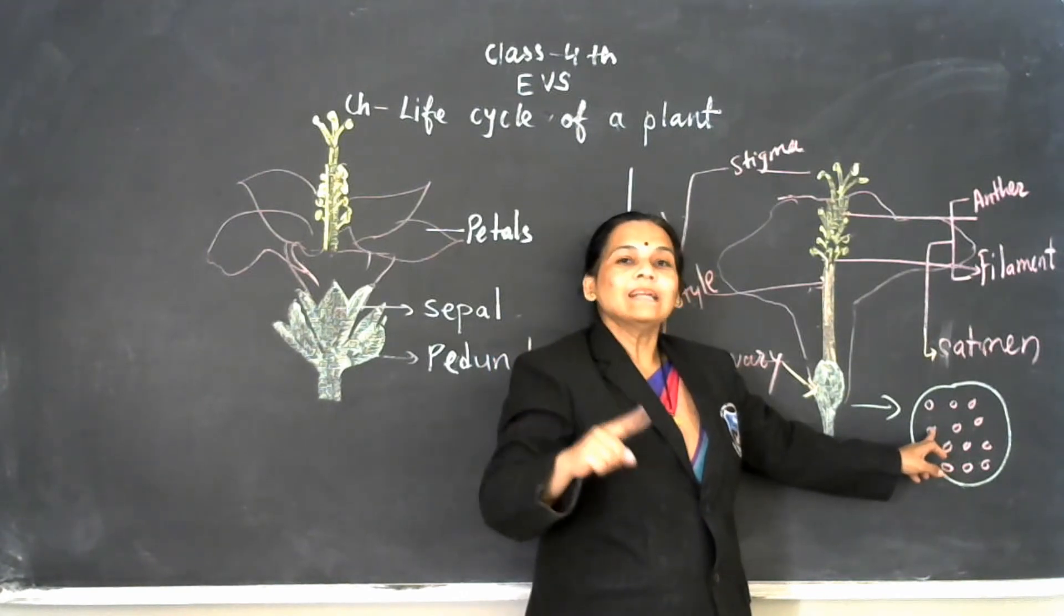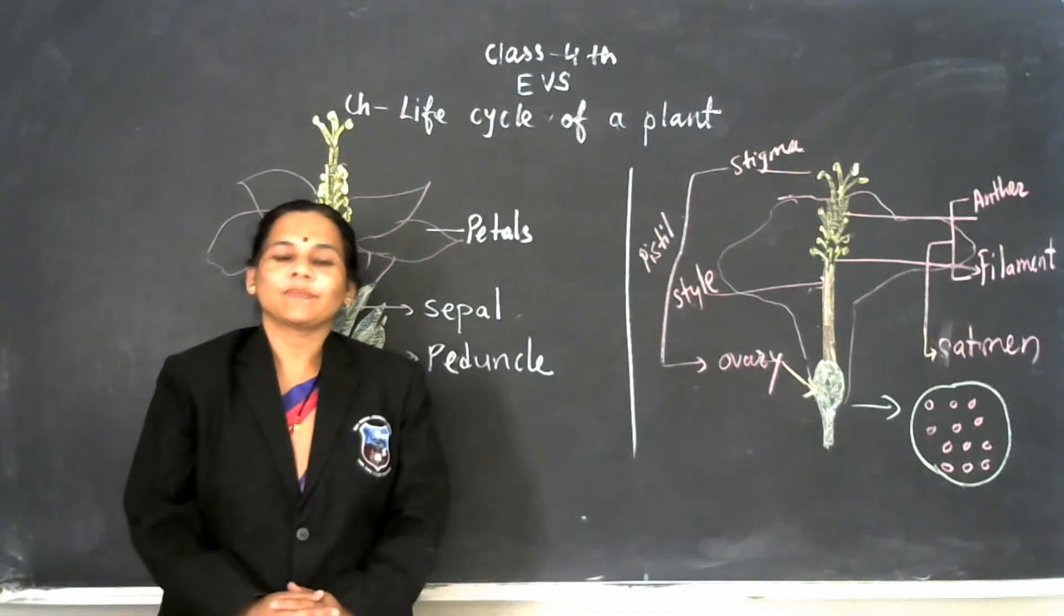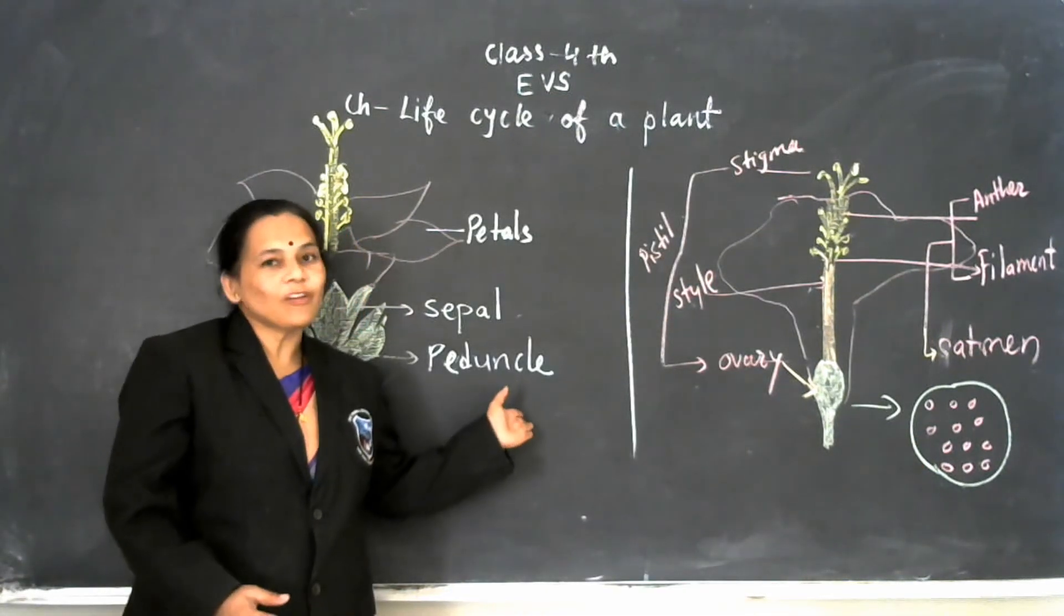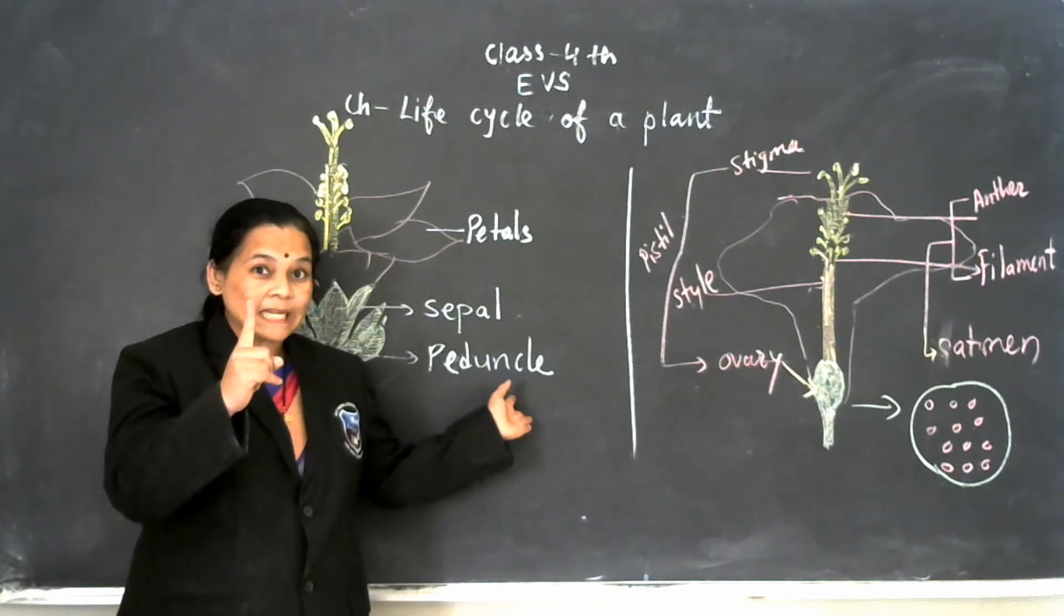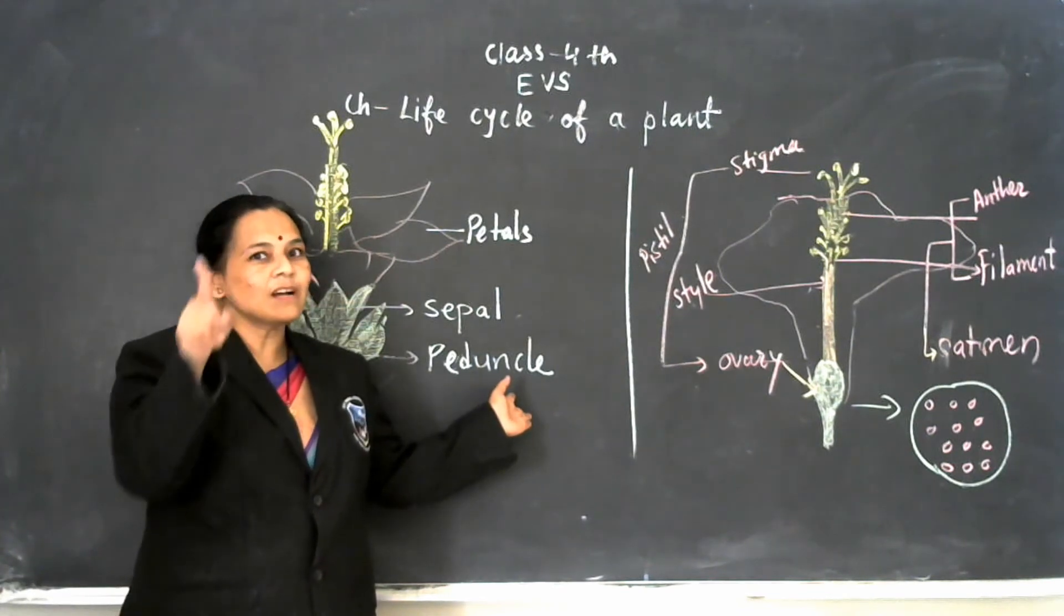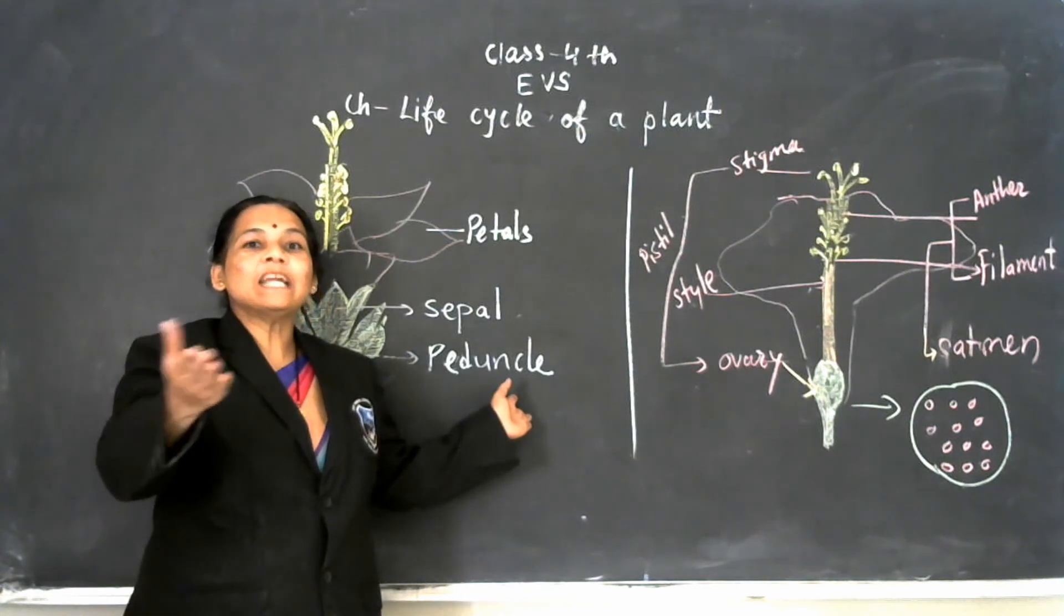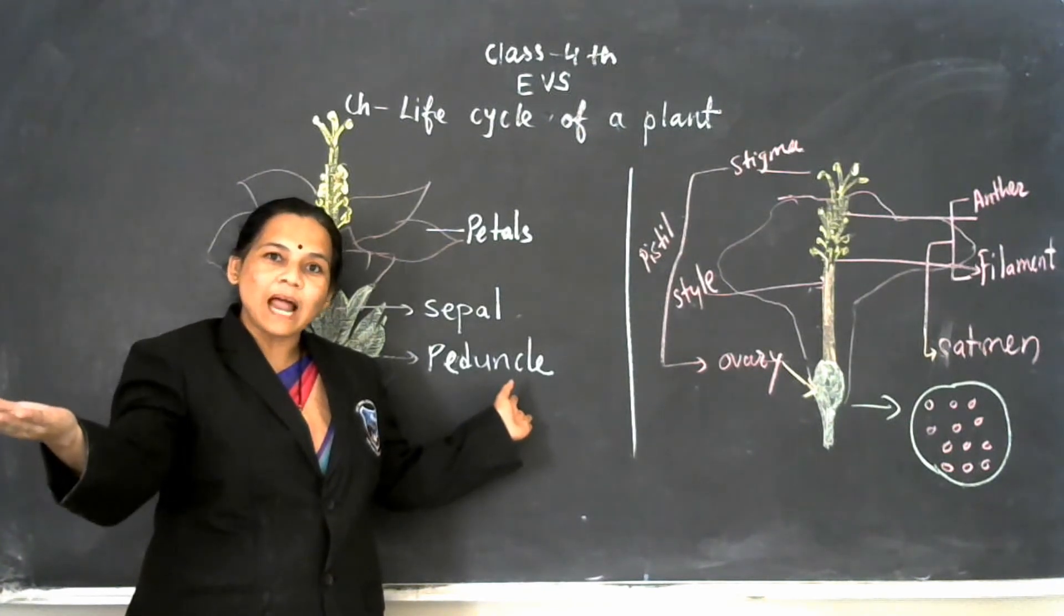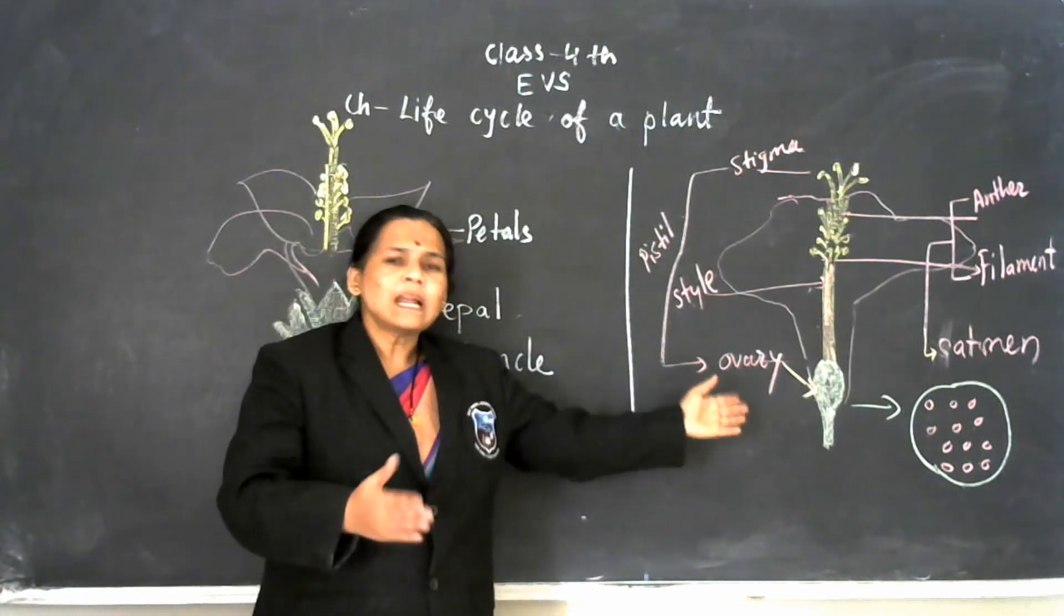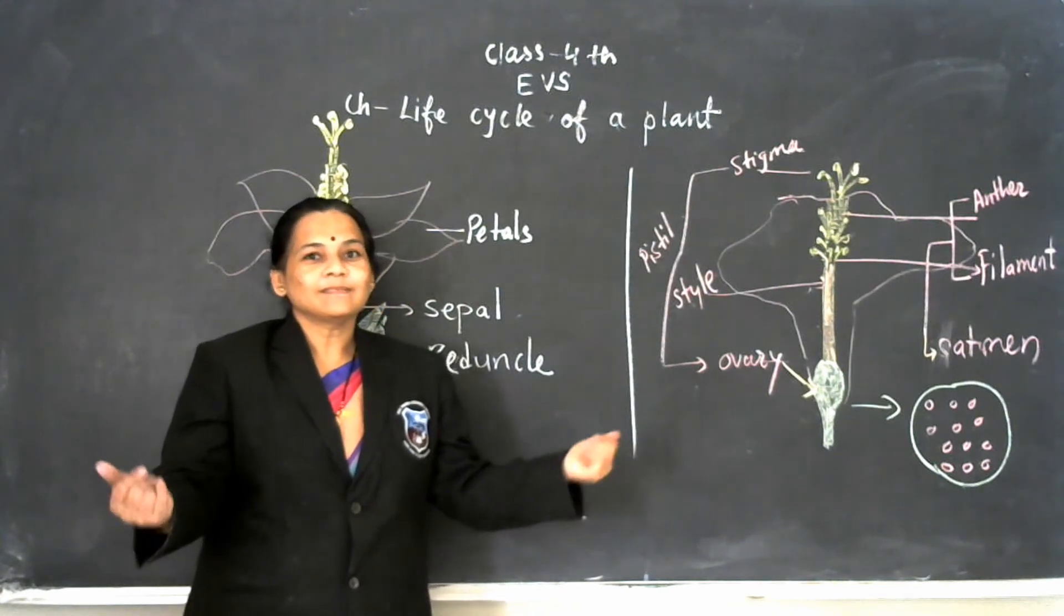I hope you understand this lesson well. Now don't forget. See, in the beginning of the life cycle of a plant, seed grows into seedling, seedling grows into adult plant, and adult plant bears flowers and fruits, and again produces seeds of that plant. Thank you.